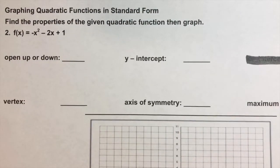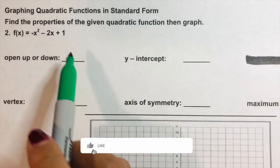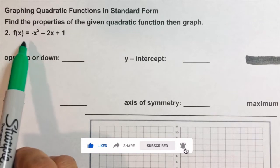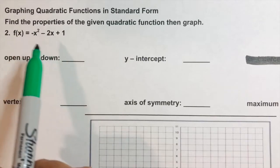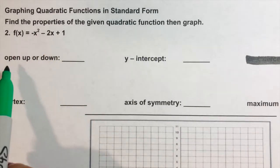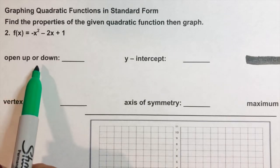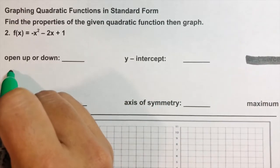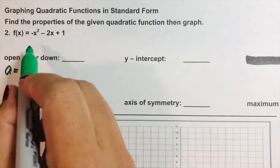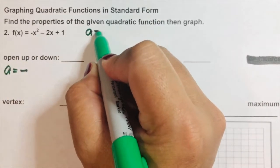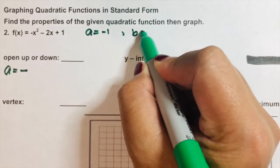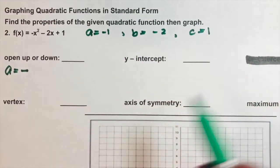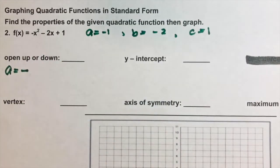Let us find the properties of this quadratic function and graph it. Our problem is f(x) = -x² - 2x + 1. Does this graph open upward or downward? As stated, when a is negative — our a is -1, b is -2, and c is positive 1 — so a is negative.